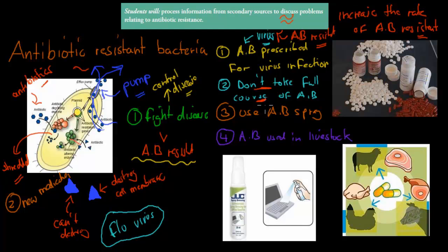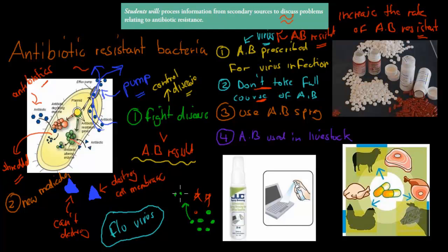Make sure to always take the full course of antibiotics. The reason is that if we take the full course, we make sure we kill every single one. If we take only two or three days' worth, that might mean we kill most of them — but which ones survive? The ones which survive are the ones which are more antibiotic-resistant, because those are the most likely to survive a couple of days. So then we have those antibiotic-resistant ones left, they duplicate, and we'll have more and more.